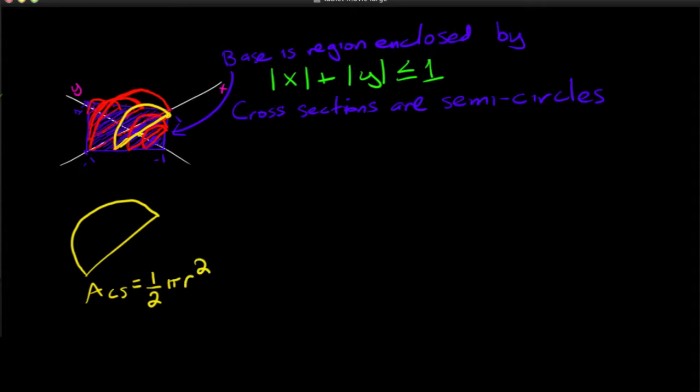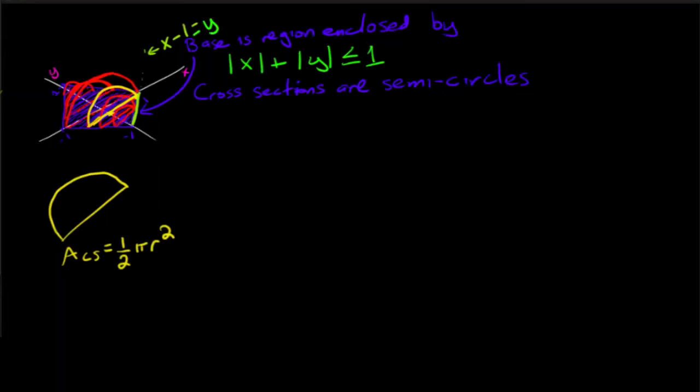Now the radius from here to here is equal to the x value right here. And so since from, let me... this line right here, this is the line x minus 1 equals to y.